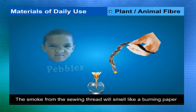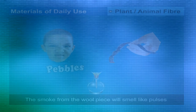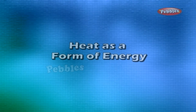The smoke from the sewing thread will give the smell of burning paper because it is made up of cellulose. The smoke from the wool piece will smell like burning eggs or pulses because it is made up of proteins.